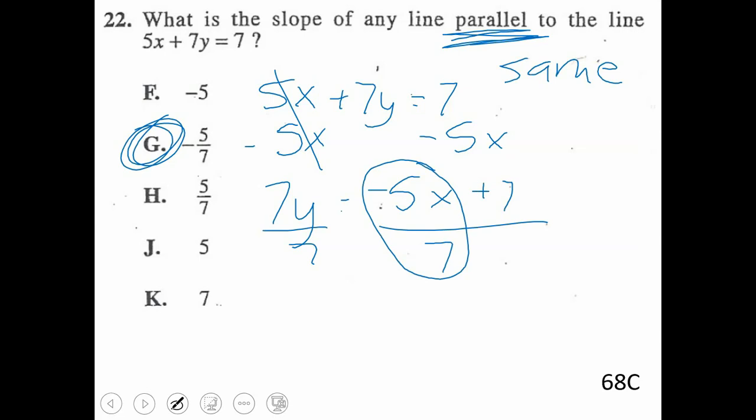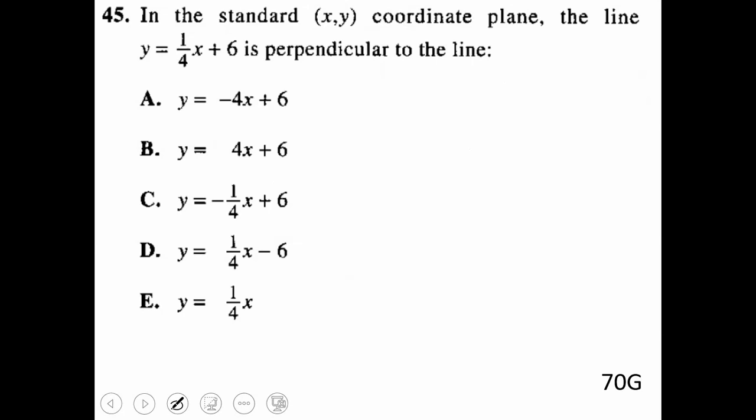This question here says you've got a line of y equals 1 fourth x plus 6. You're looking for perpendicular. Again, perpendicular is that opposite reciprocal. So right now our current slope is 1 fourth. The opposite is going to make that negative. Reciprocal means you're going to flip that. You flip 1 over 4, you're going to get 4 over 1. So you've only got one line that has a slope of negative 4. That's going to be A.